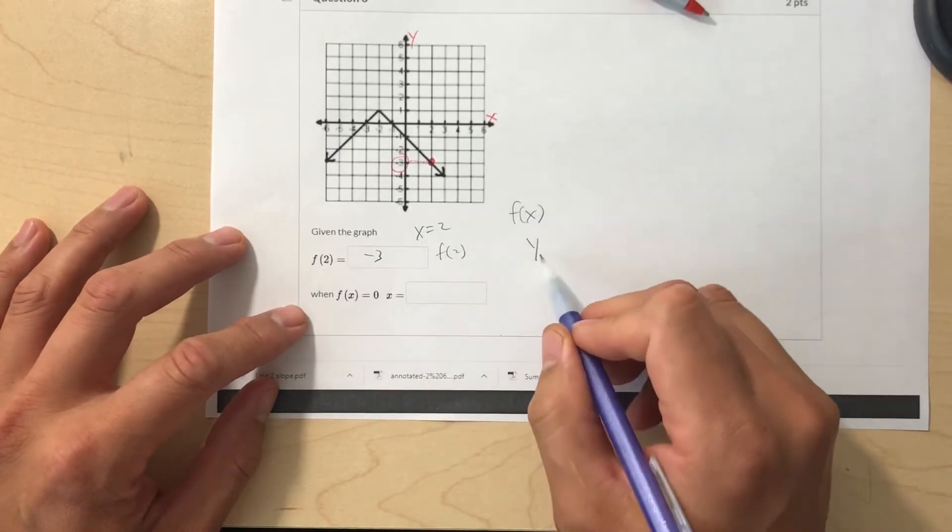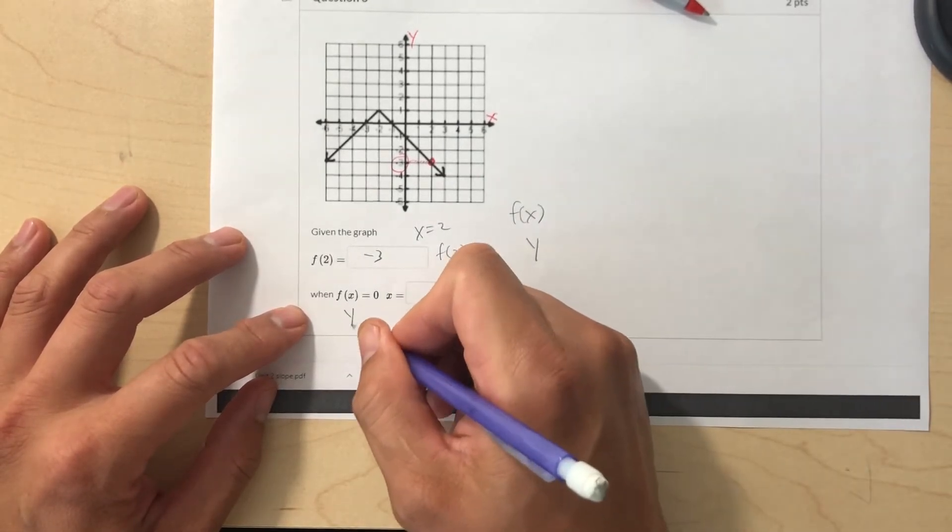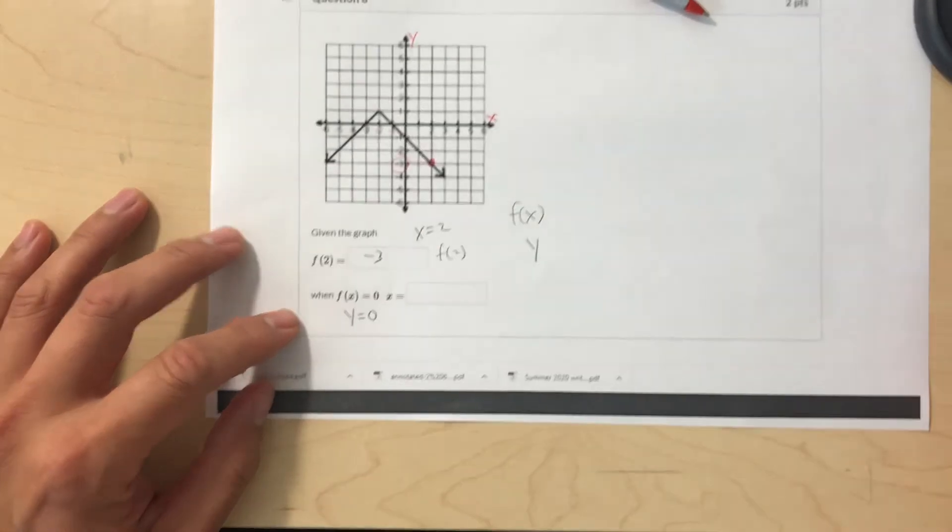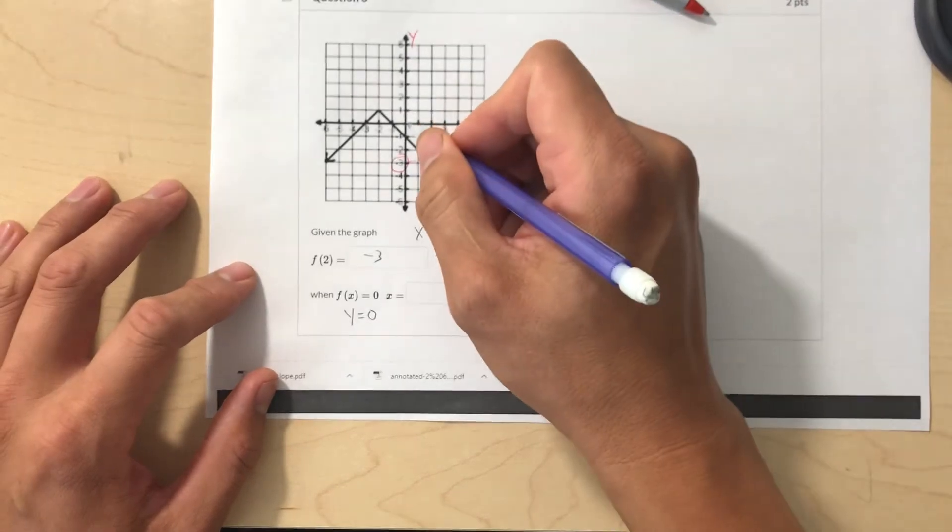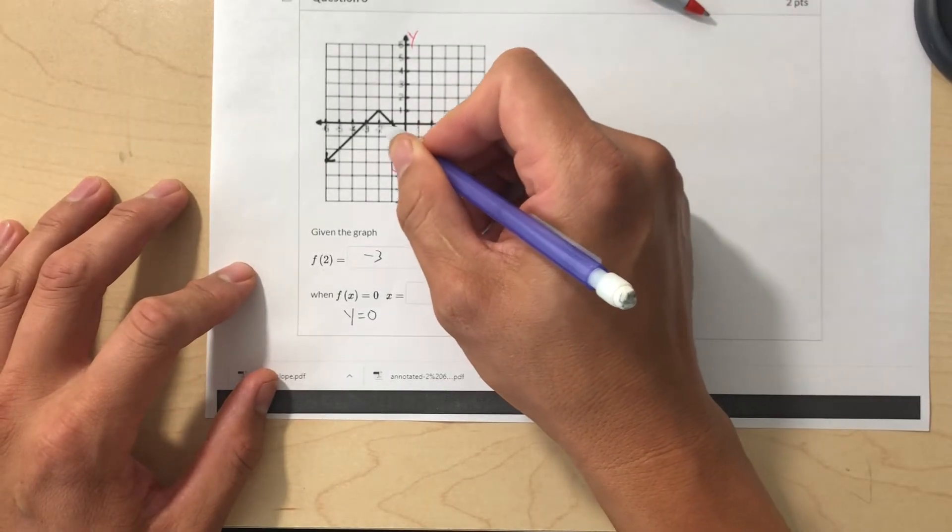Now for this one, f of x is like y, so technically this is saying y is equal to 0. If y is 0, what is x? So at y is 0, so y is 0 here, then where is x, x on the graph?